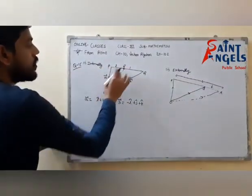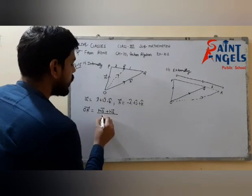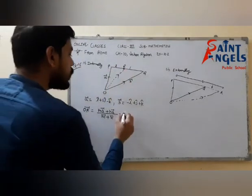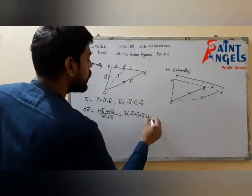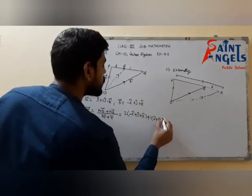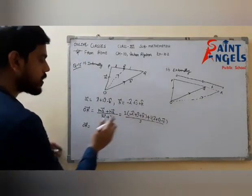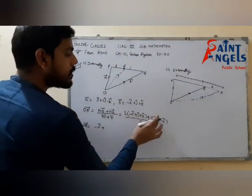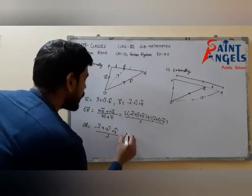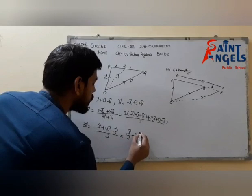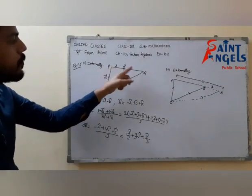By the section formula, the position vector of point R for internal division is given by (M·vector B + N·vector A) upon (M + N), where M = 2 and N = 1. Substituting the values, OR vector equals (minus 2I + I) cap, which is minus I-cap, plus (2J + 4J) = 4J-cap, and (2K minus K plus K) upon 3. This gives the position vector of point R when it divides line PQ internally in ratio 2:1.